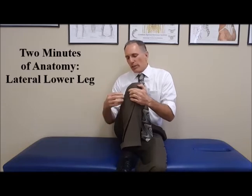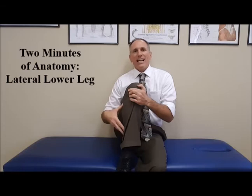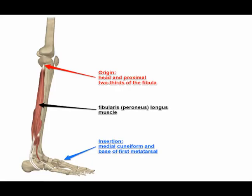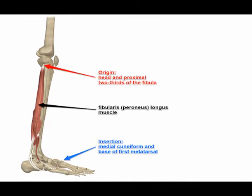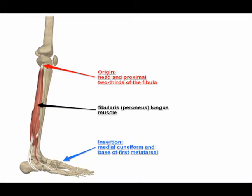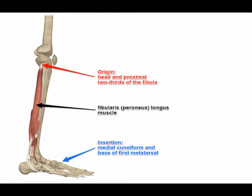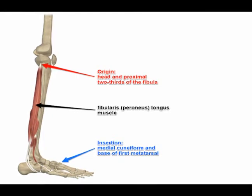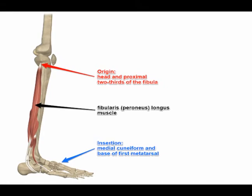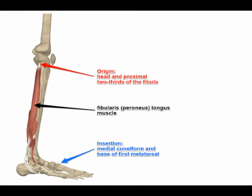The two muscles, the peroneus longus and the peroneus brevis, originate on the lateral aspect of the fibula. The peroneus longus originates up here at the proximal aspect of the fibula, and it runs inferior. It goes posterior and inferior to the lateral malleolus, goes to the bottom of the foot, and attaches to two bones on the plantar aspect of the foot: the first metatarsal bone and the medial cuneiform bone.